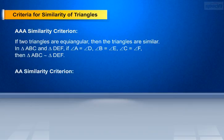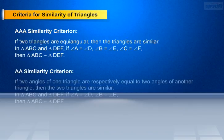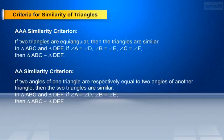AA similarity criterion: if two angles of one triangle are respectively equal to two angles of another triangle, then the two triangles are said to be similar. In triangle ABC and triangle DEF, if angle A equals angle D and angle B equals angle E, then triangle ABC is similar to triangle DEF.